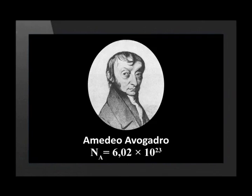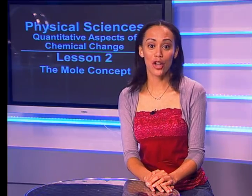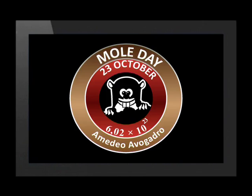Amedeo Avogadro did not figure out this number. It was decades later when people calculated how many atoms or molecules there are in a mole, and they honored Avogadro by naming the number after him. Fortunately, this number is given to us on data sheets in exams and tests, so we don't have to know it off by heart — we just need to know how to use it. Some chemists are so excited about this number that every year they organize a Mole Day, on the 23rd of October.